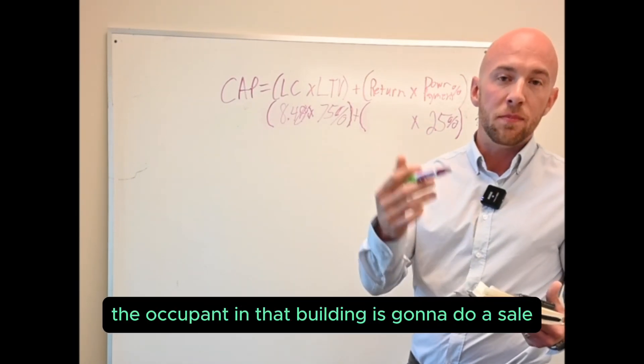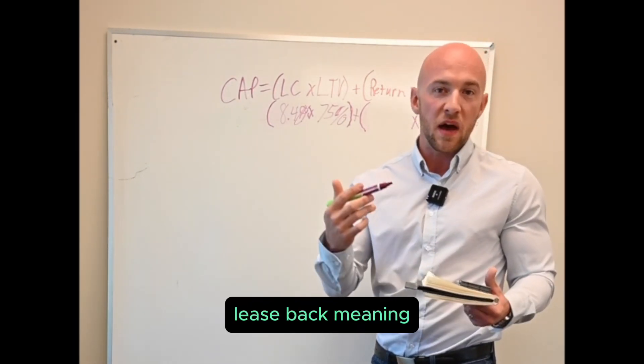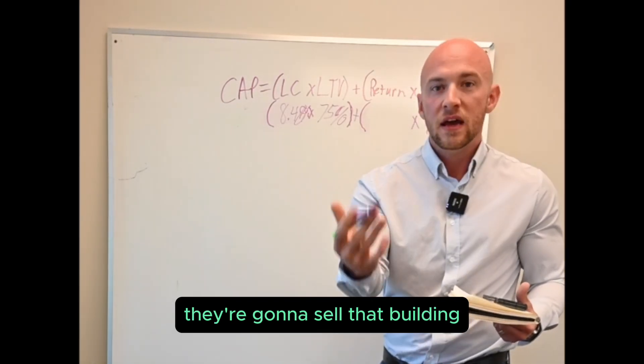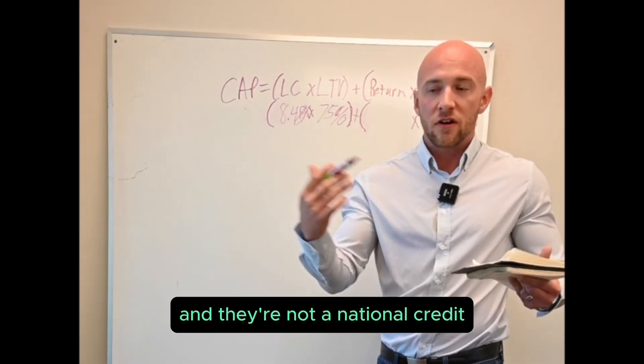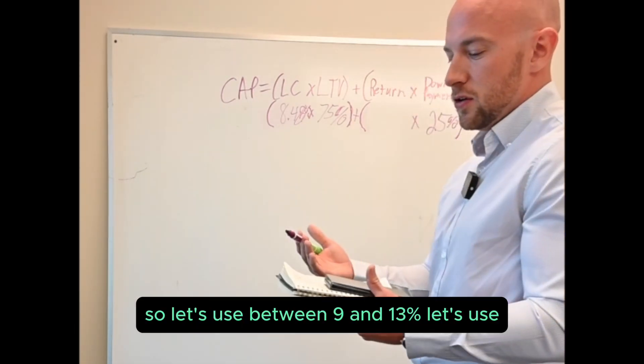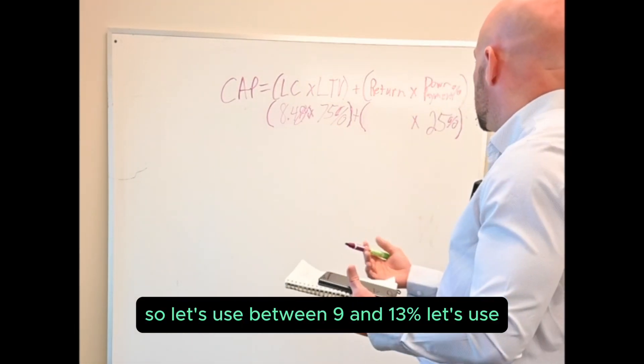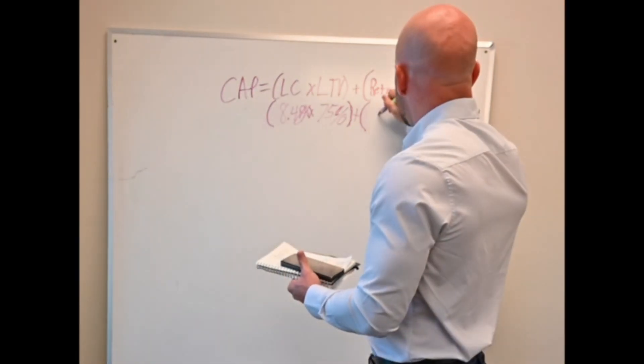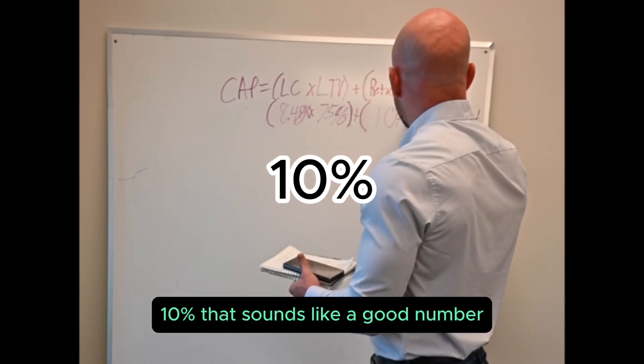Let's say they're buying a standalone industrial property and the current tenant, the occupant in that building, is going to do a sale leaseback, meaning they're going to sell that building and lease it back from us and they're not a national credit. So that puts them more in a core plus. So let's use between nine and thirteen percent, let's use ten percent. That sounds like a good number.